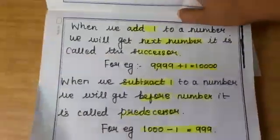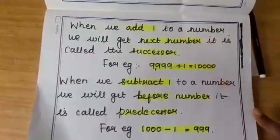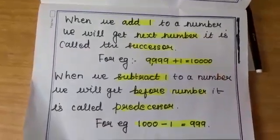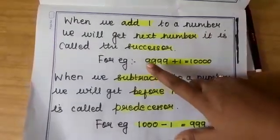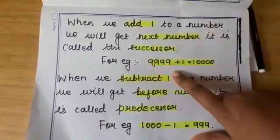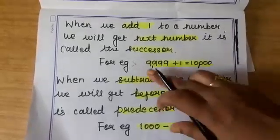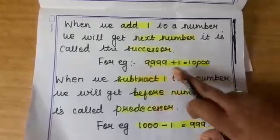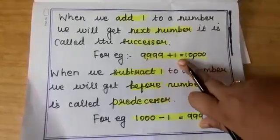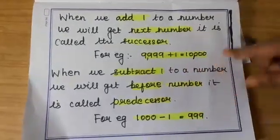So when we add 1 to a number, we will get the next number. That is called its successor. Next number or after number. So when you add 1 to 9,999, you will get 10,000. So the successor of 9,999 is 10,000. When you add 1 to this, you will get its successor.